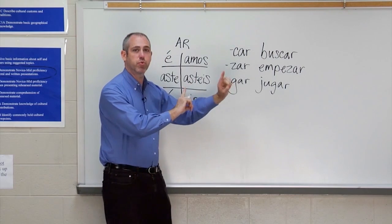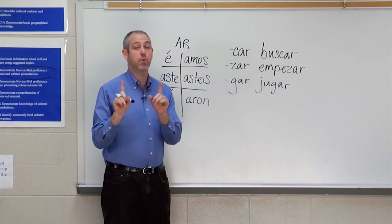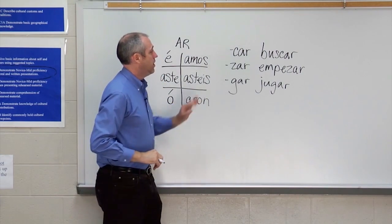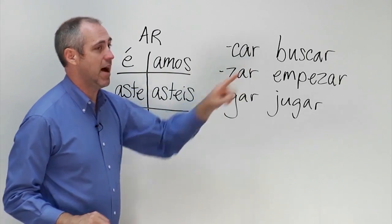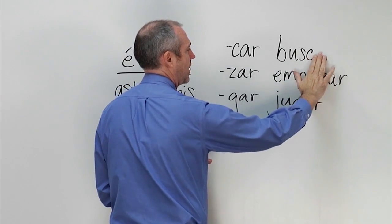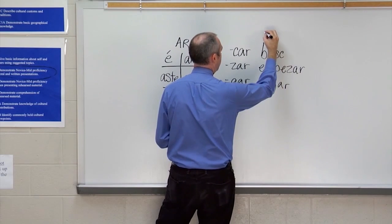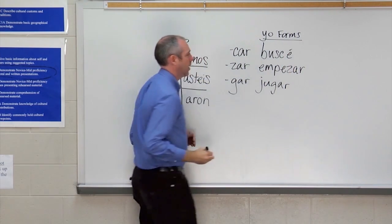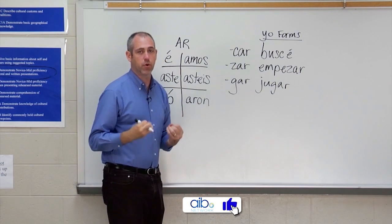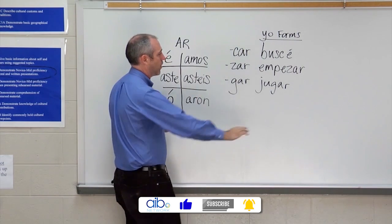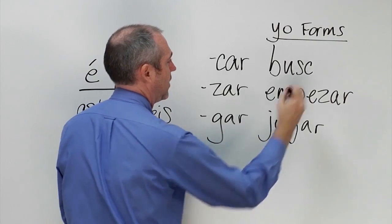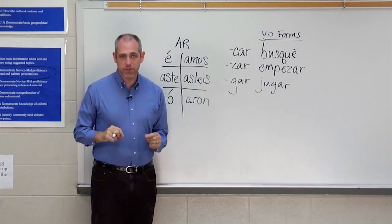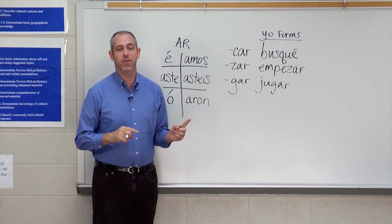What happens is when we put these into the preterite tense, we have to make a slight modification — remember, only the YO form, only in the preterite. With CAR verbs like buscar, normally we'd add the É ending, but we have to change the C to QU: yo busqué. That's the only thing to remember with CAR verbs — change that C to QU.